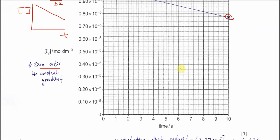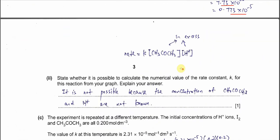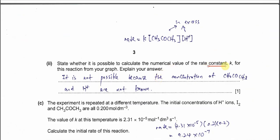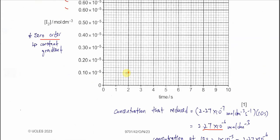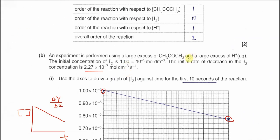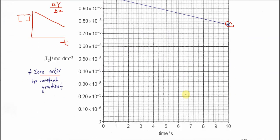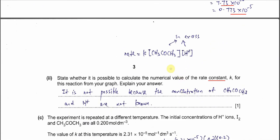Part 2: state whether it is possible to calculate the numerical value of the rate constant k. Because propanol and H⁺ are both in excess, their concentrations are not known. Since we cannot determine these concentrations, we cannot substitute into the rate equation, so the rate constant k cannot be calculated.